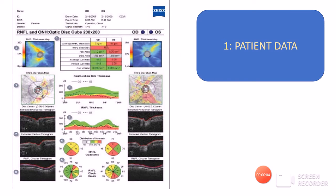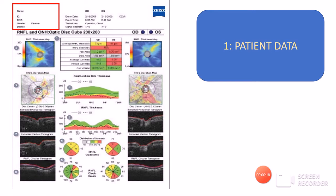Let us start by reading a printout of an OCT which is showing the RNFL and the ONH analysis. The first point that we see is the patient data. The patient information consists of the name, age, sex, examination date and time, date of birth, and registration number. All this is very important and needs to be fed correctly into the machine, because it can be used later for correlation with further printouts to find out whether the glaucomatous defect is progressing or not.